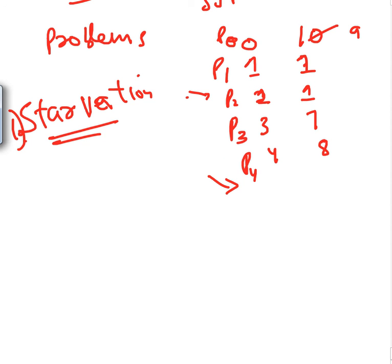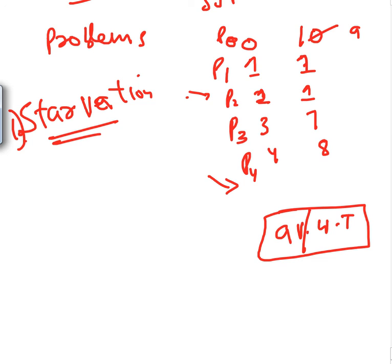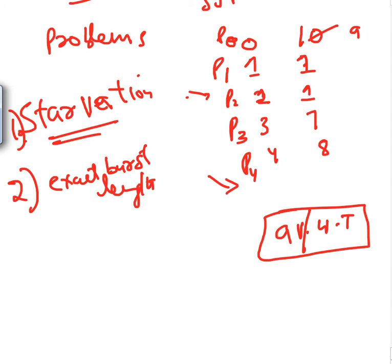One possible fix is to increase the priority of a waiting process over time — that's covered in priority-driven scheduling. But another fundamental problem with these algorithms is that we only estimate the burst length; we never know the exact burst length. We are essentially guessing because we can't predict the future. So practically speaking, both SJF and SRTN are impractical, and we need better algorithms.